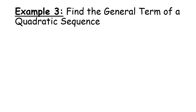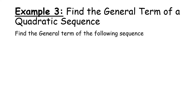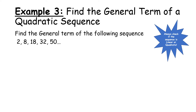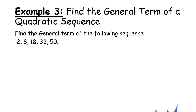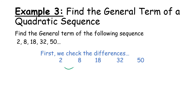Let's look at an example: find the general term of the sequence 2, 8, 18, 32, 50. Always check whether the sequence is linear or quadratic. We check the first differences: add 6, add 10, add 14, add 18 — definitely not a common first difference, so it's not linear or arithmetic. Checking second differences: add 4, add 4, add 4 — we have a common second difference, therefore it is quadratic.